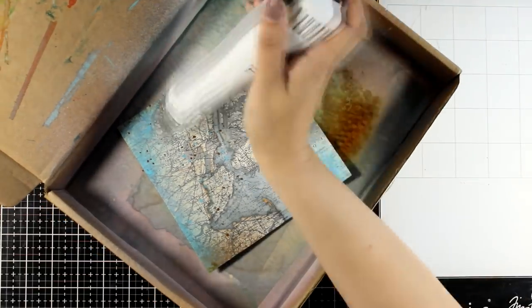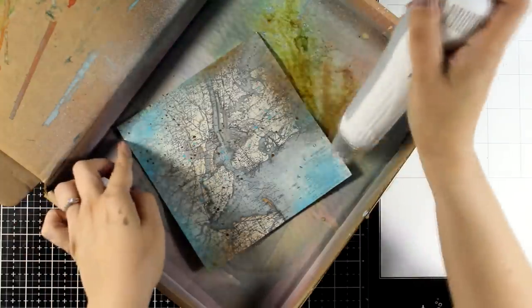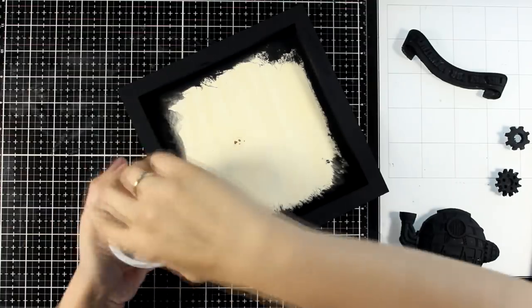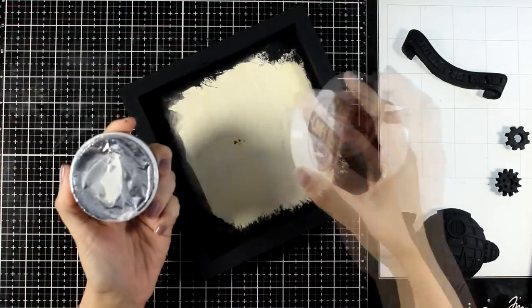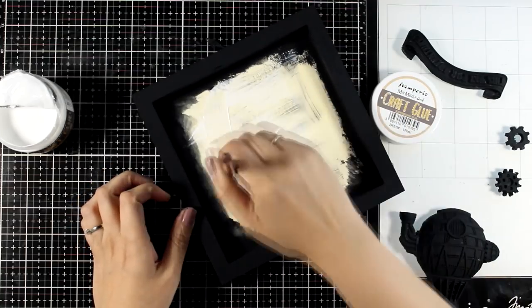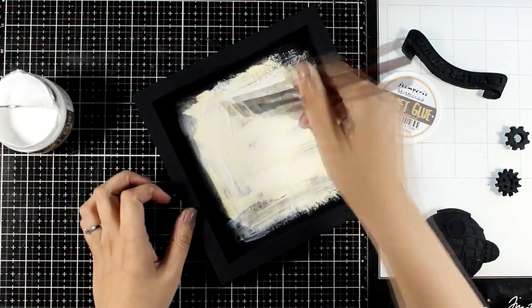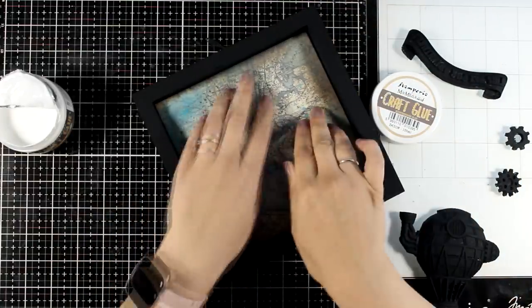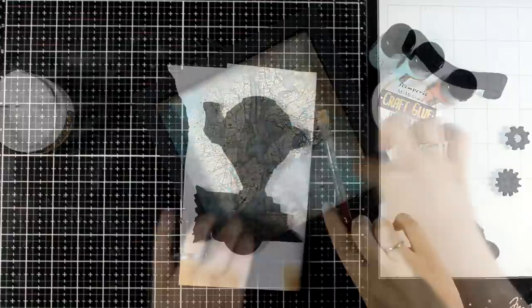Now to have my background ready, I did cover up the frame all around with black gesso, and then all I need to do is stick inside that background. For that you can use any type of glue that you like, you can use your matte medium. Here I'm using craft glue by Stamperia. It's a new glue to me and I'm really happy with how it works.